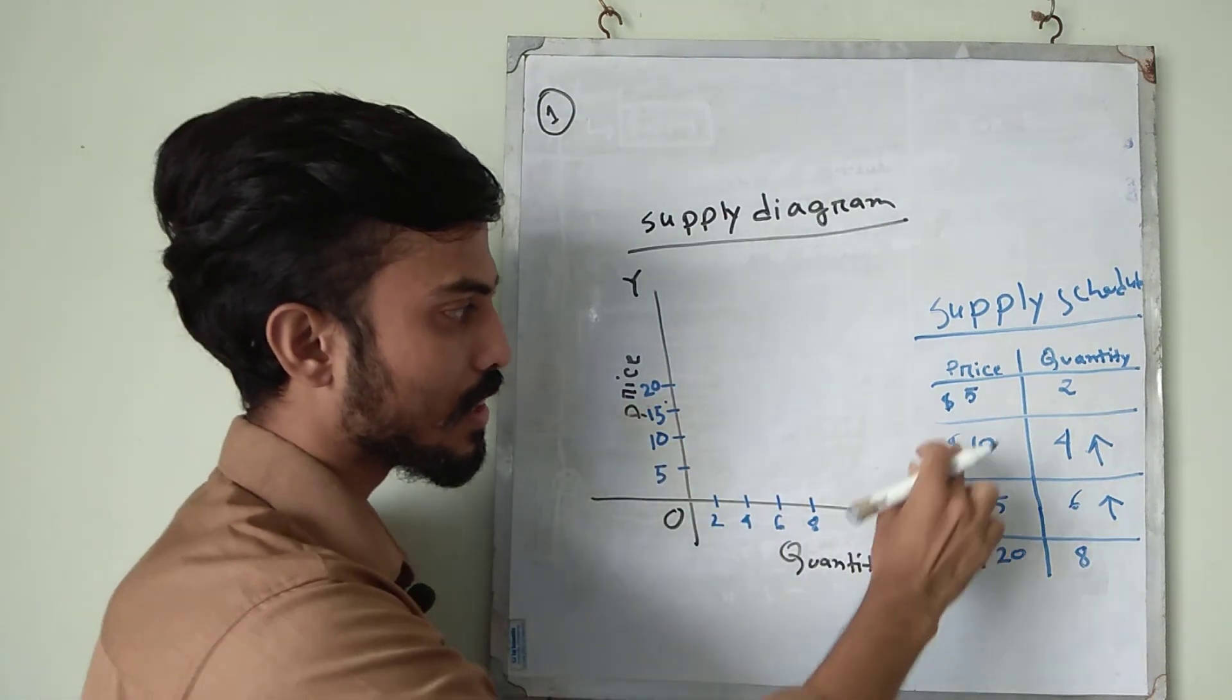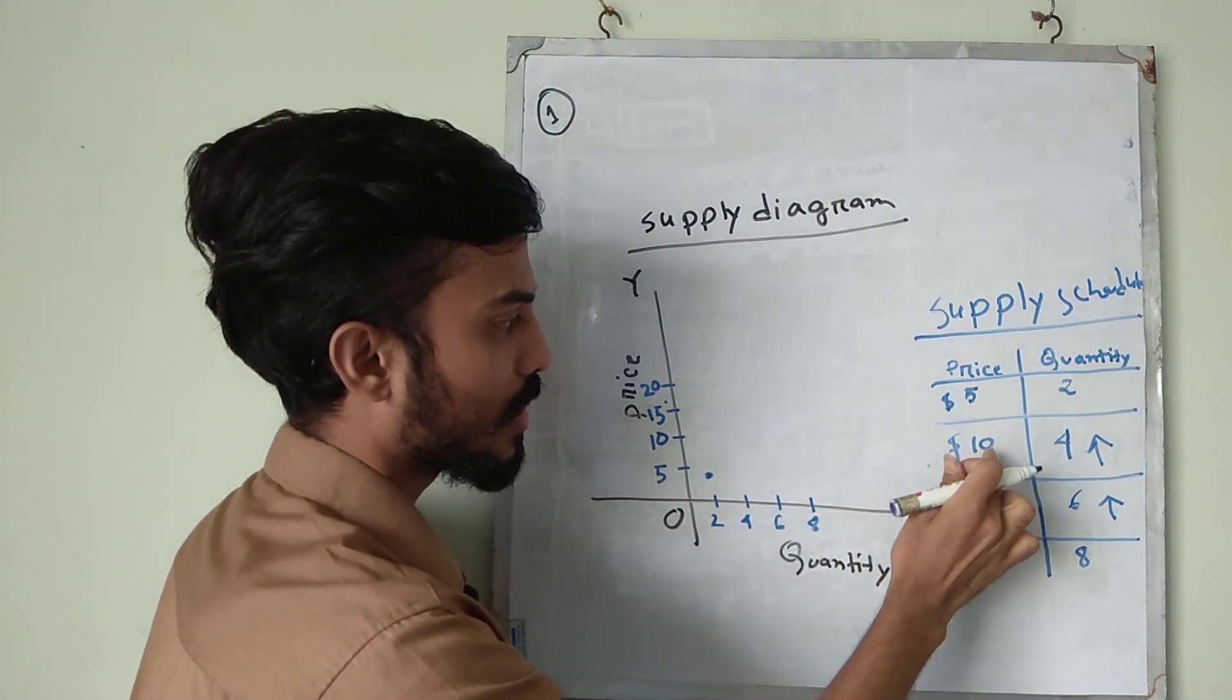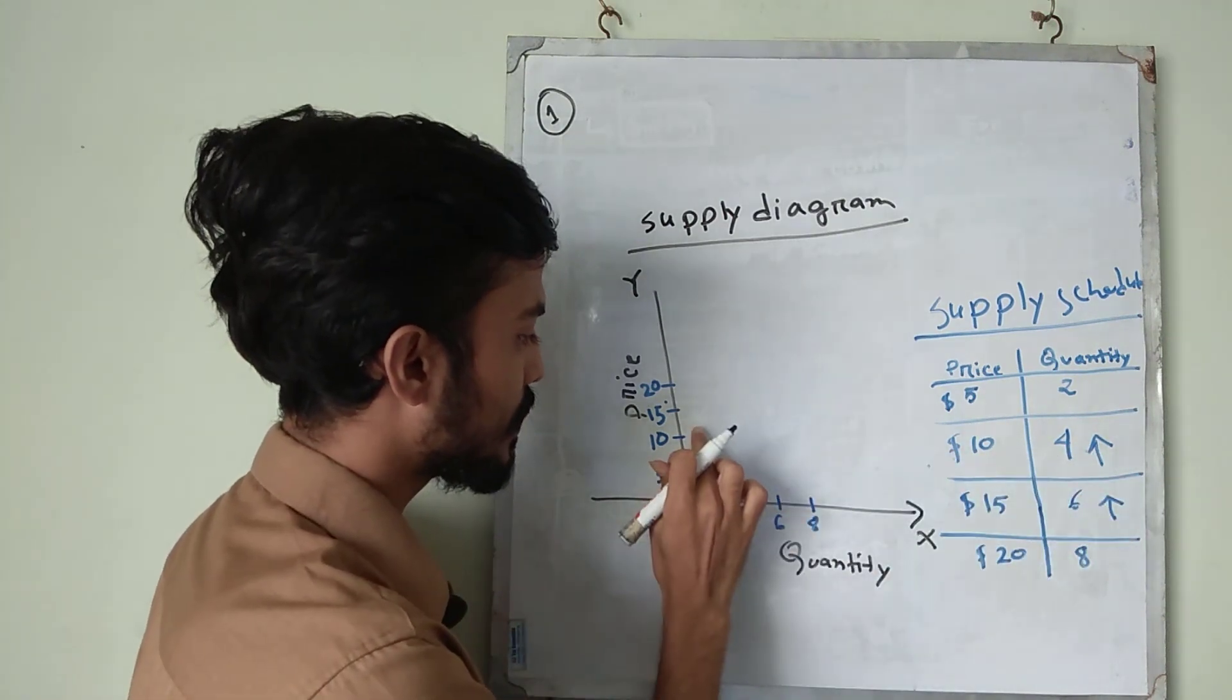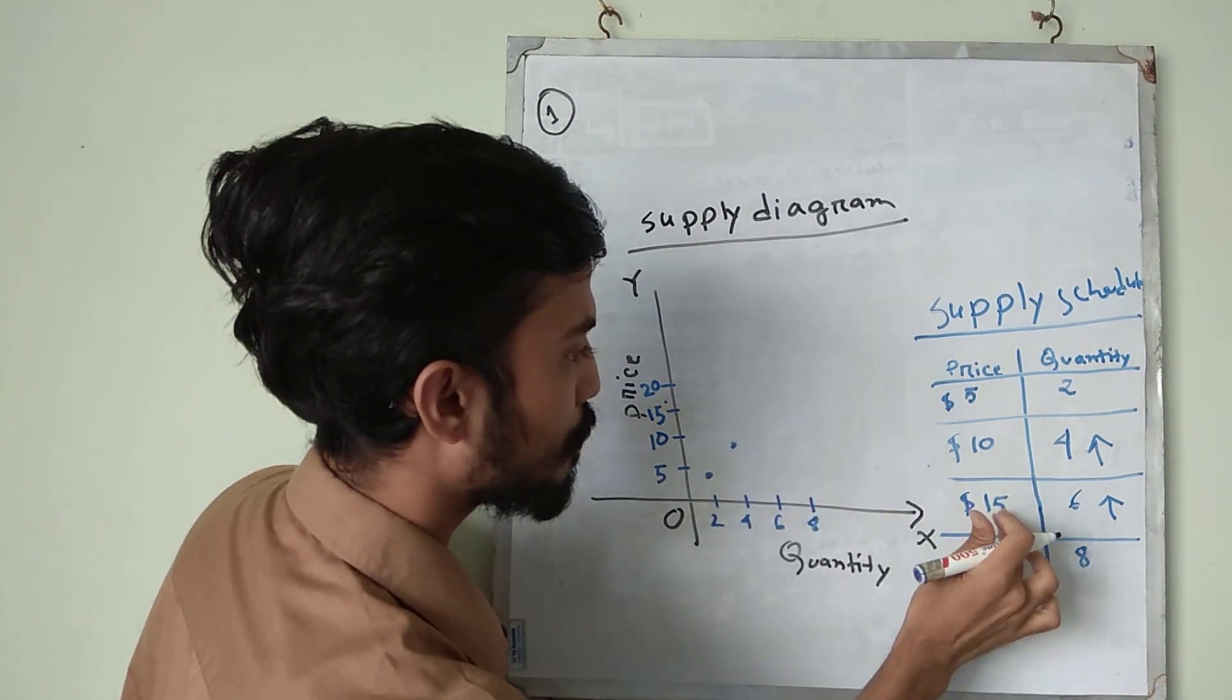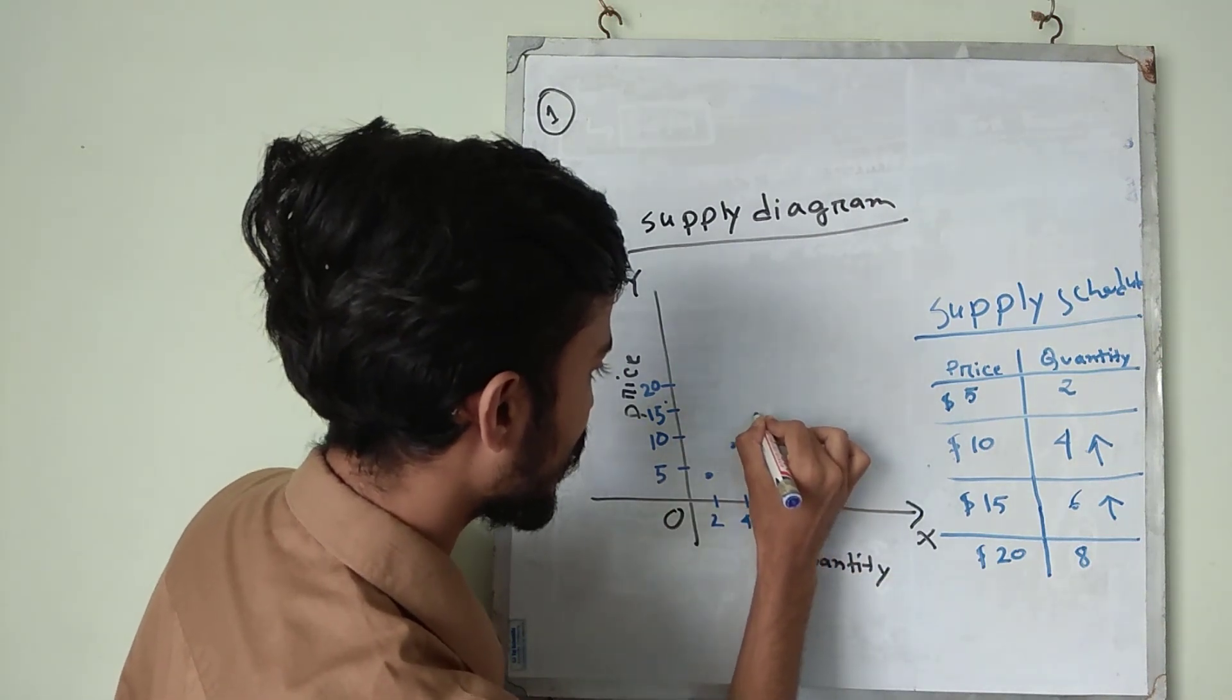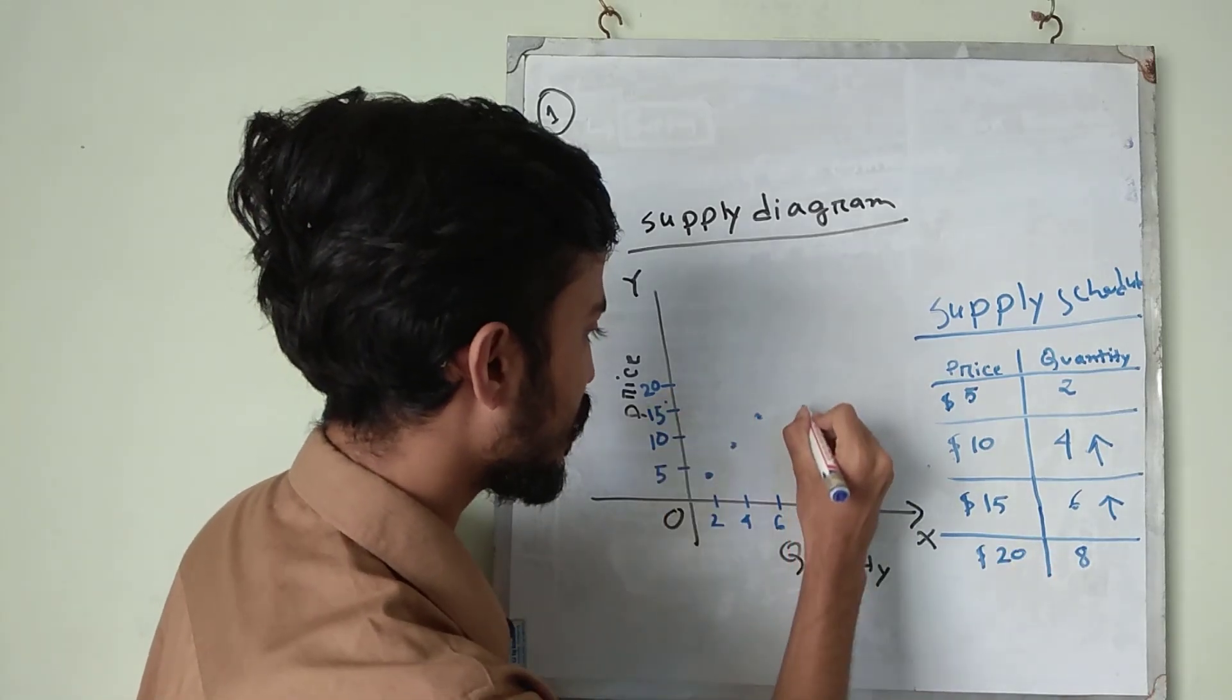So let's say the first thing is price is 5 and quantity is 2. Quantity is 2 and price is 5. The point will be here. Next, 10. Price is 10 and quantity is 4. And that will be here. And then 15, 6. So 15, 6 that will be here. And 8, 20. This will be here.